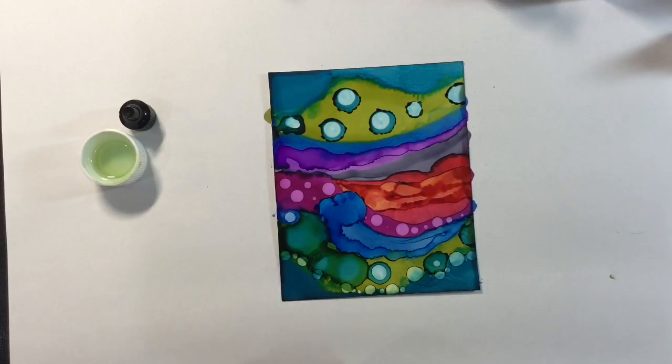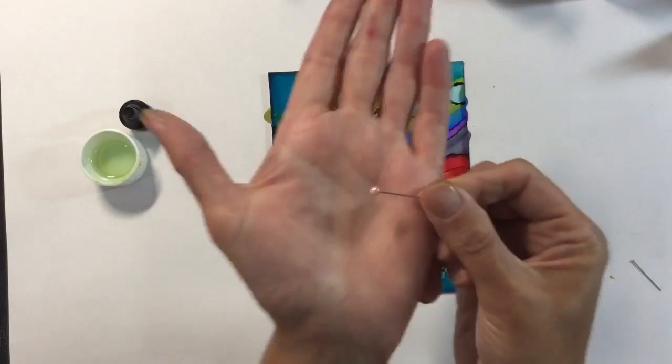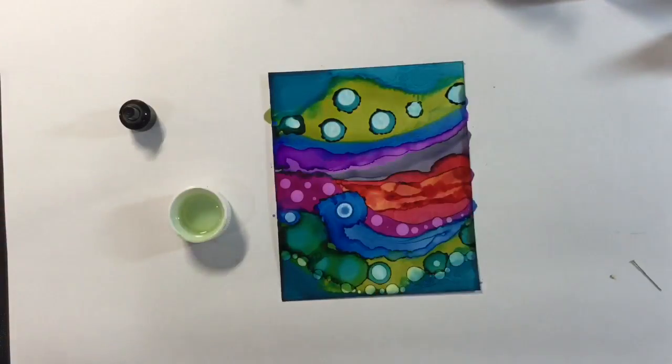And then dropping in some isopropyl alcohol with a slightly larger pin head. I think this pin head has got a pearl bobble on the end just to create a slightly bigger bloom.